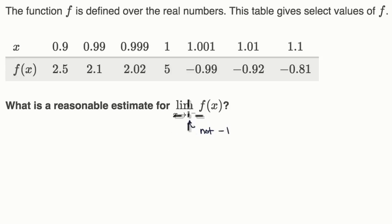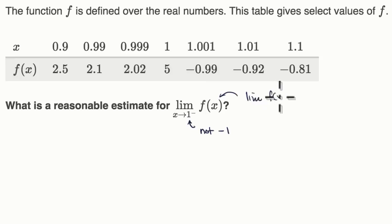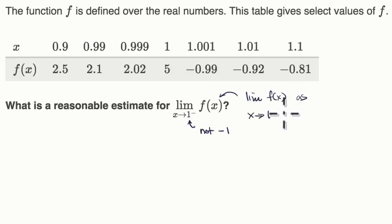Sometimes your brain just sees a one and that little negative sign, and you don't even think about it. But it's not saying that. It's saying — let me put a little arrow here — this is the limit of f of x as x approaches one from the left.